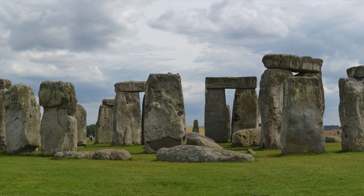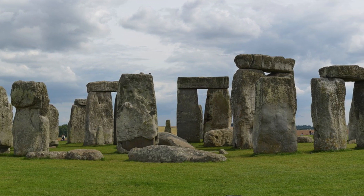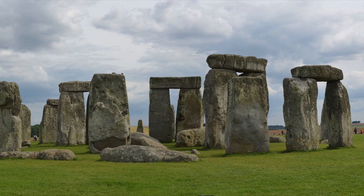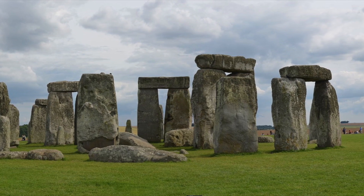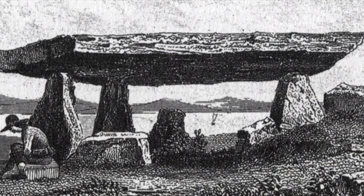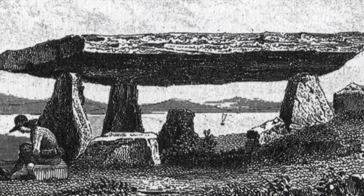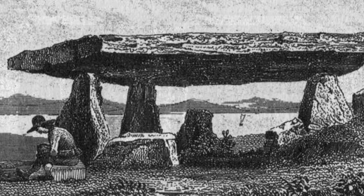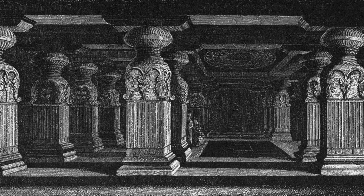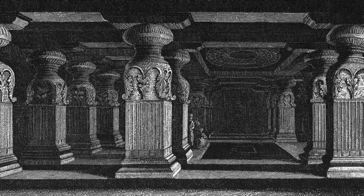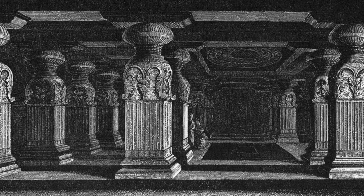called trabeation, or post-and-lintel construction. In the beginning, these structures were as crude as one stone supporting another, but eventually civilizations like those of ancient India or Egypt created freestanding columns with beams.